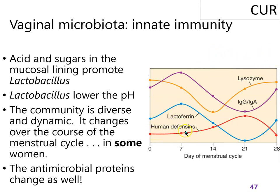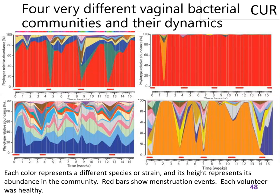These graphs show how different protein abundances go up and down, which partially drives the community. This data comes from an article where four healthy women had their microbiota exhaustively examined over approximately 15 weeks, with samples taken every few days. The researchers identified which bacteria were present, and menstrual periods are marked with red dots.